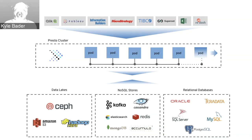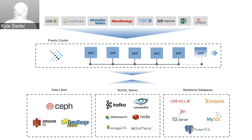There's a wide variety of different connectors available — whether you're going to query data in a Ceph or Amazon S3-based data lake, or if you have an AMQ Streams Kafka cluster you want to pull data out of, or a MongoDB instance, or even a relational database whether it be an open source variant like MySQL or Postgres, or a more enterprise-y option like Microsoft SQL Server. There are connectors that have you covered for Presto.